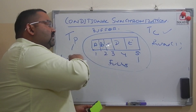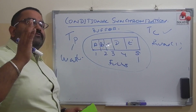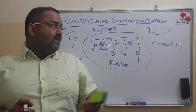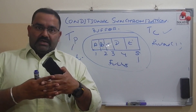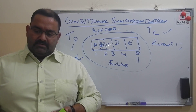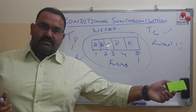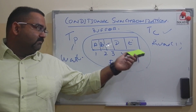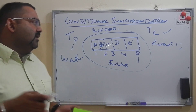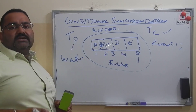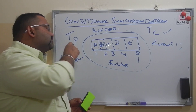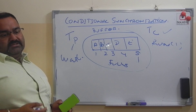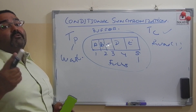Whenever the buffer is full, the producer signals the consumer to run. Whenever the buffer is empty, the consumer signals the producer to run. Both producer and consumer are synchronized based upon the condition of the buffer — if buffer is full, consumer runs; if buffer is empty, producer runs. This is called conditional synchronization, and this problem is called the bounded buffer problem because the size of the buffer is fixed.